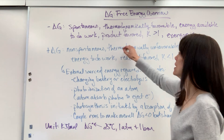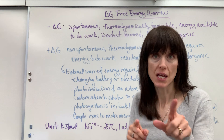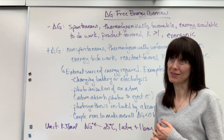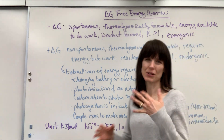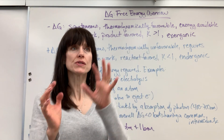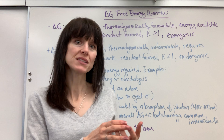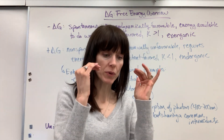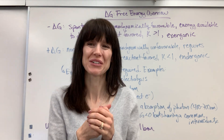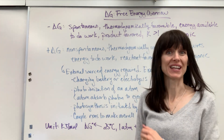Negative delta G is product favored, and that means K is greater than 1. I have a video that relates delta G and K — if you haven't seen that, check it out under the Entropy and Free Energy playlist. There's a technical word for this: it's exergonic. Think of negative delta H as exothermic — that is spontaneous. Similarly, exergonic means negative delta G, energy available to do work.